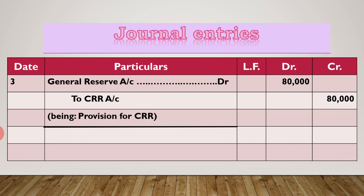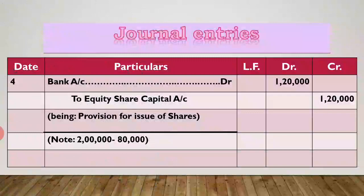In CRR we have 80,000 transferred. So we need total provision of 2 lakh. Since general reserve provides 80,000 to CRR, remaining 1,20,000 must come from new shares. So bank account debit to equity share capital account 1,20,000 — being 1,200 new shares issued. Total provision for CRR: 80,000 from general reserve. So 2 lakh minus 80,000 = 1,20,000 provision made from issue of shares.